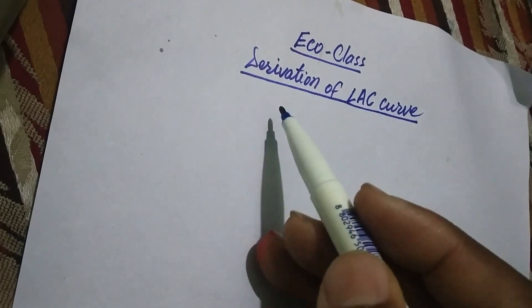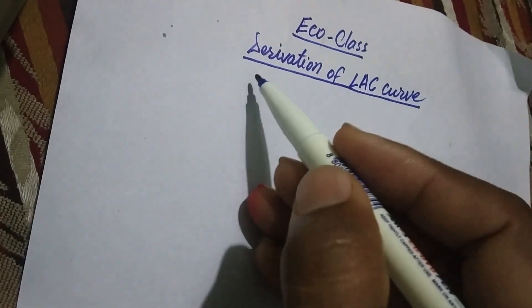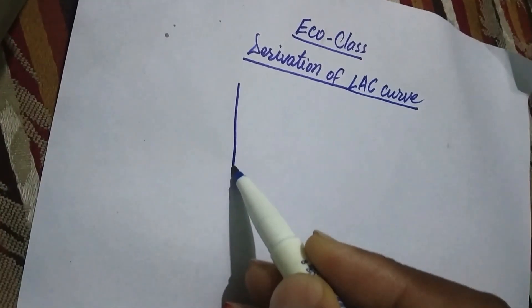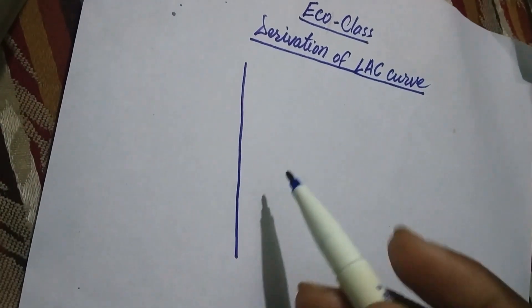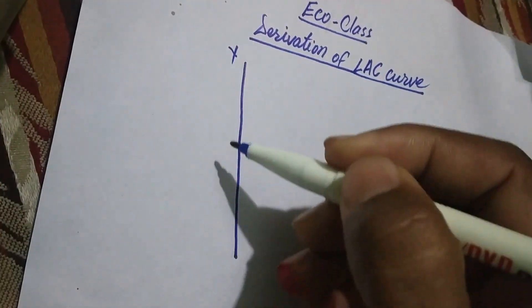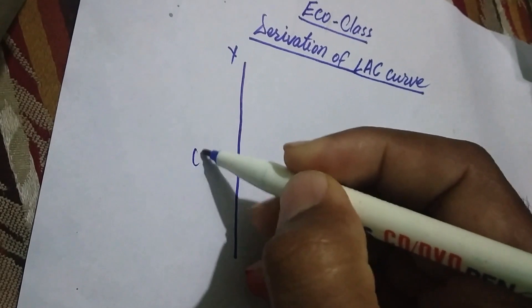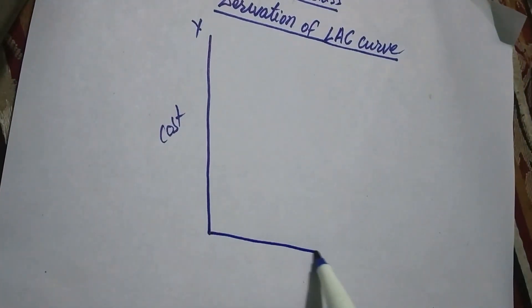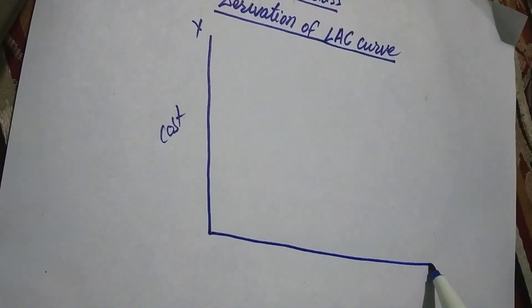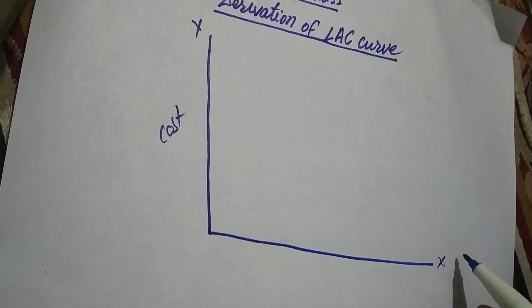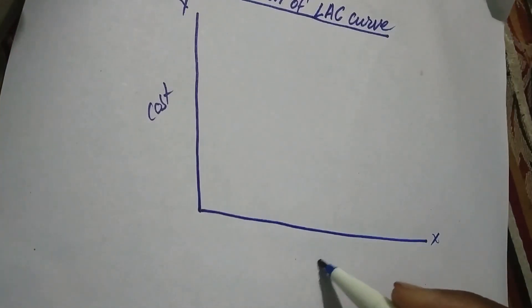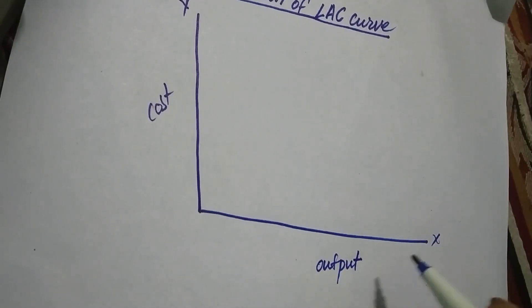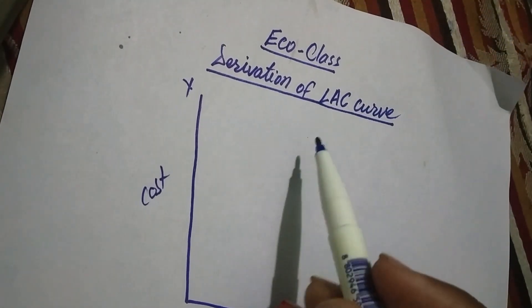In order to explain the derivation of the long-run average cost curve, I am going to draw a diagram. This is the Y-axis — on the Y-axis we measure cost. This is the X-axis — on the X-axis we measure output in the long run.